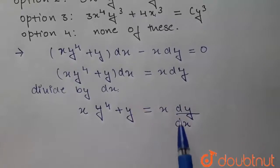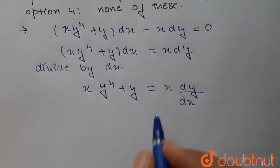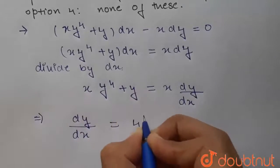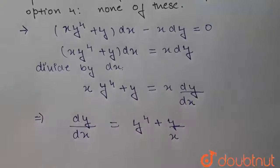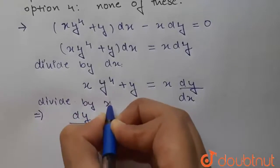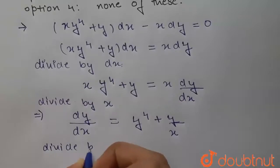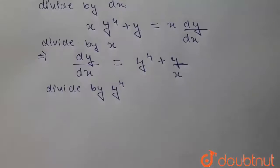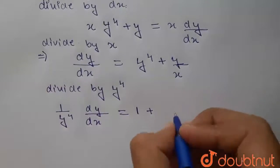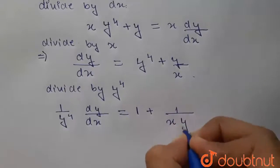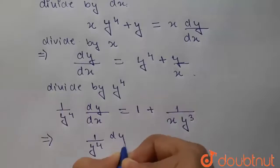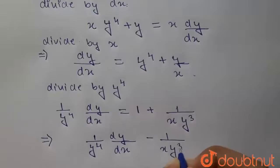After dividing by dx, this becomes x into y to the power 4 plus y equals x dy by dx. Now we divide this equation by x, so this will become dy by dx equals y to the power 4 plus y by x. Then we divide again by y to the power 4, giving us 1 upon y to the power 4 dy by dx minus 1 upon x y cubed equals 1.